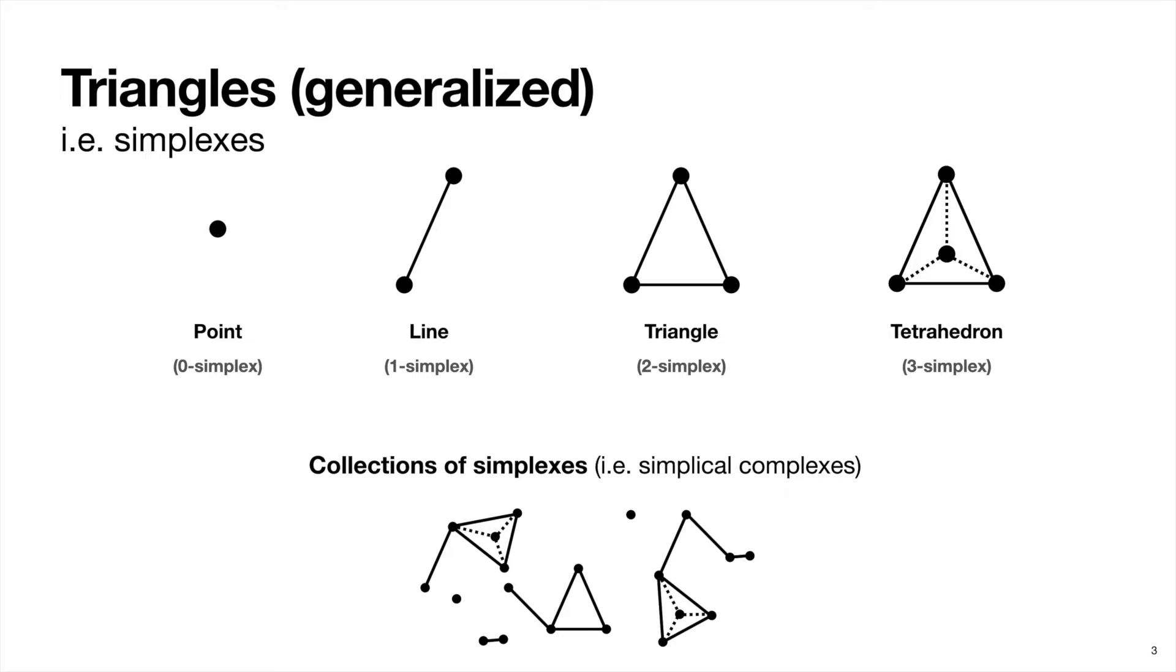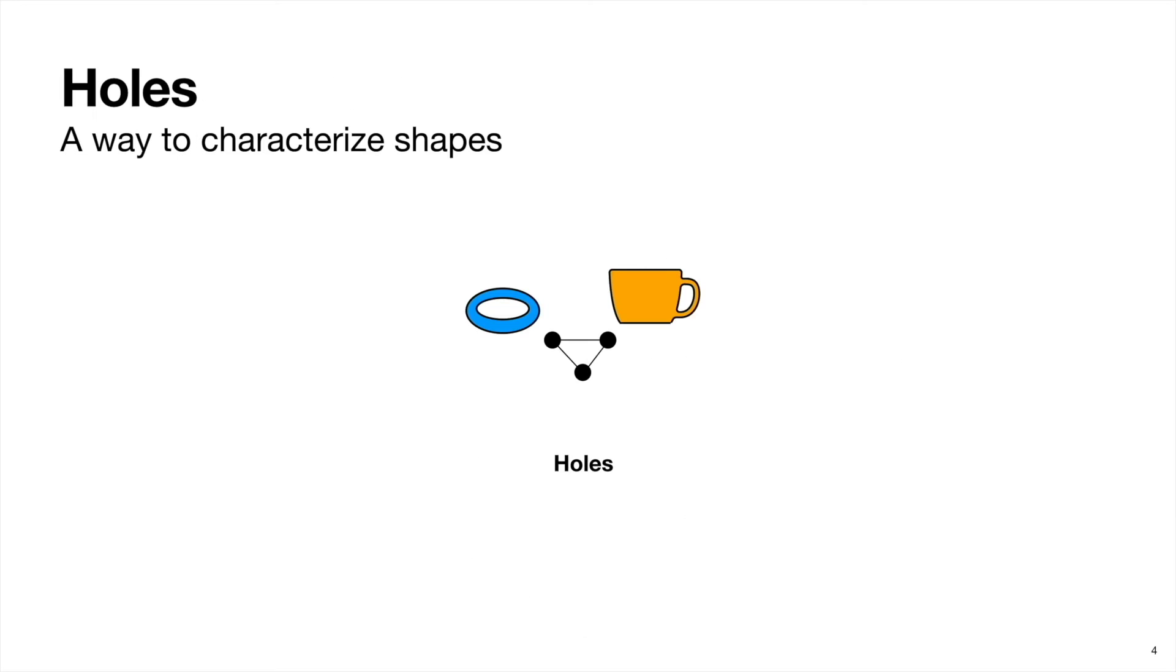So now let's talk about how we might compare shapes together, no matter how different or complicated they may seem. So one way to do this is by looking at holes. For example, these three objects shown here, we have a torus, a loop, and a coffee mug. So while these may appear to be very different shapes, they have something fundamental in common. They all have a hole.